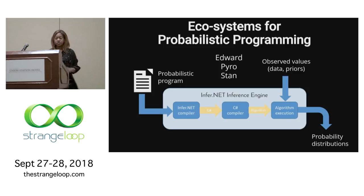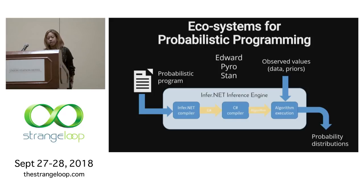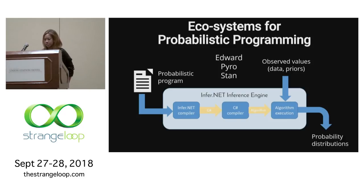There are different ecosystems for running these probabilistic programming models. The one I mostly use is Infer.NET, which is a Microsoft inference engine on C#. You put a probabilistic program into an Infer.NET compiler and get your probability distributions. Other ecosystems include Pyro, which is a newer one, Stan, which is quite standard, and Edward. I've mostly used Infer.NET. Now I'm going to motivate this in asthma and allergic diseases, which has been where the bulk of my research has been over the past eight years.